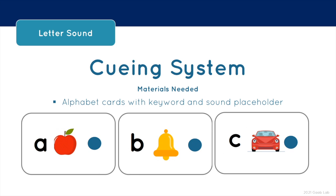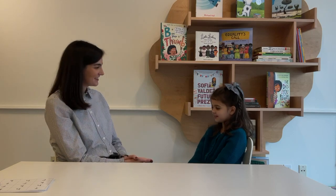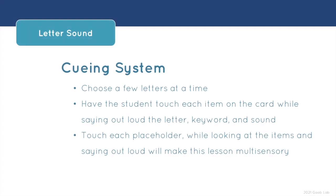You are able to print out these alphabet sound cards directly from the lesson plan. Choose a few letters at a time or, if applicable, use the entire alphabet. Have the student touch each item on the card while saying out loud the letter, keyword, and sound. Touching each placeholder on the card while looking at the items and saying out loud will make this lesson multi-sensory.